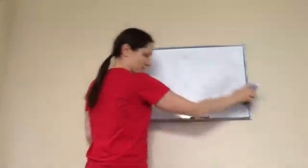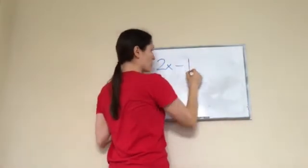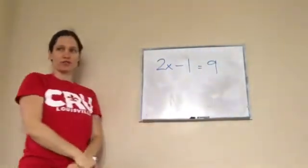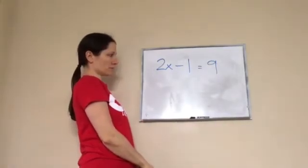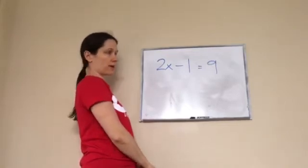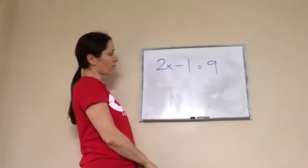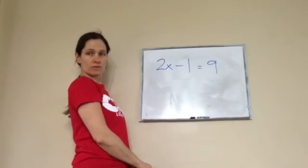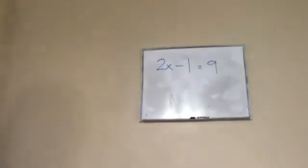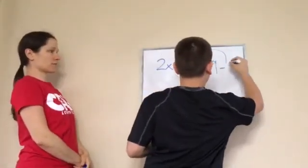One more. Ready? 2x minus 1 equals 9. Do it by yourself. Here, let me write it: 2x minus 1 equals 9. You at home do it as well. Remove this right here. Yes, come and do it and show what you did.